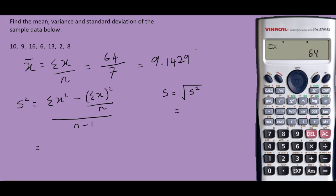In order to find the sample standard deviation, we select shift 2, and number 3 gives us the sample standard deviation. Number 2 gives us the population standard deviation.